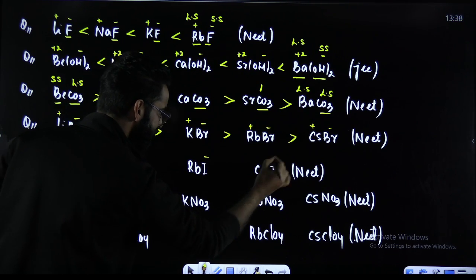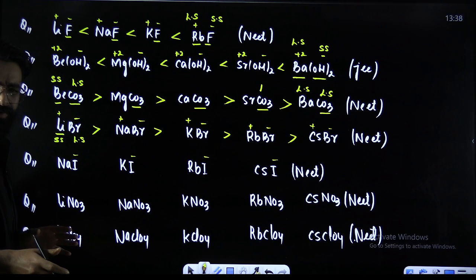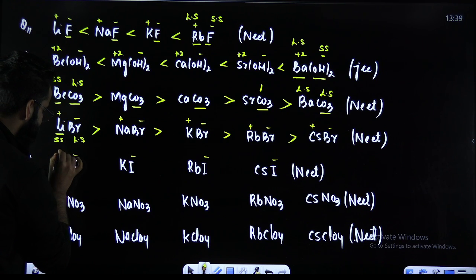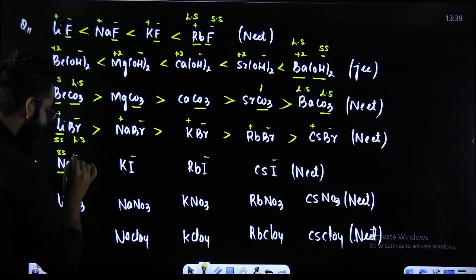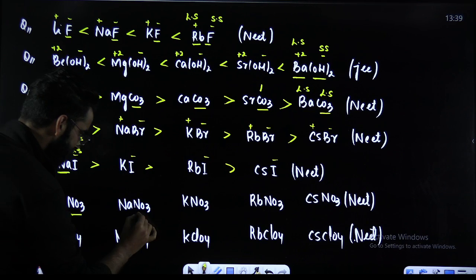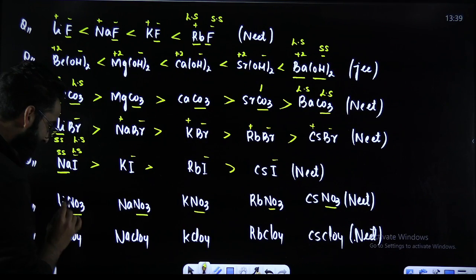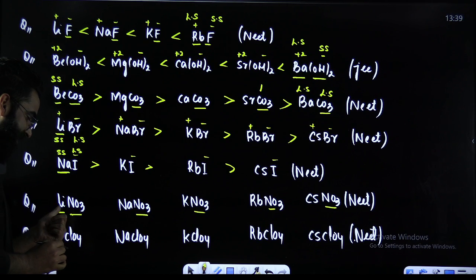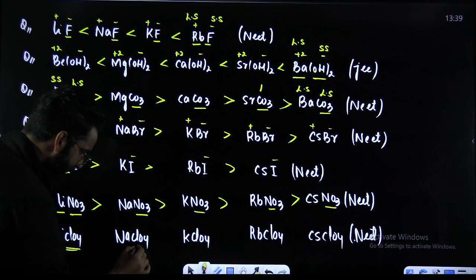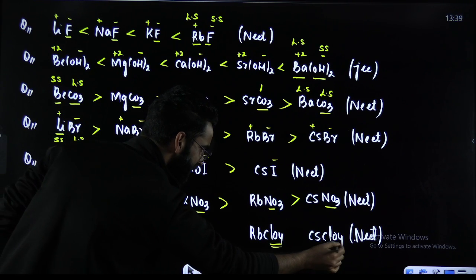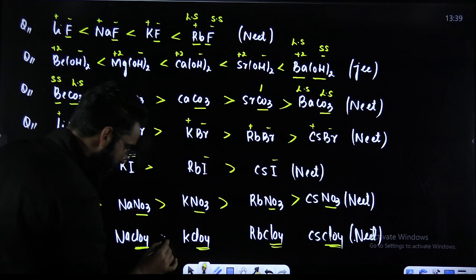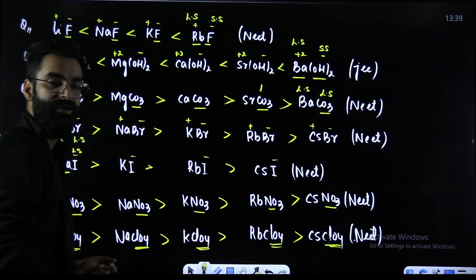This is I⁻ — the larger sized anion, since I⁻ comes at the bottom of group 17. Na⁺ and K⁺ are among the smaller sized cations. Smaller sized cation with larger sized anion means more size difference, more is going to be the solubility. For NO₃⁻ — this is a larger sized anion. Li⁺ is the smaller sized cation. Smaller sized cation, larger sized anion, more size difference, more is the solubility. For the ClO₄⁻ series — also a larger sized anion — the same logic applies. More size difference, more is going to be the solubility. This is the solubility order for all these questions.